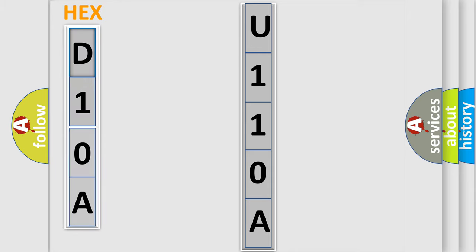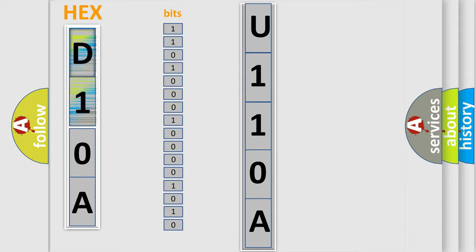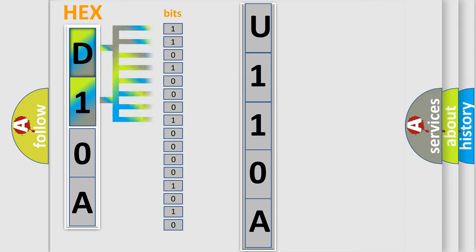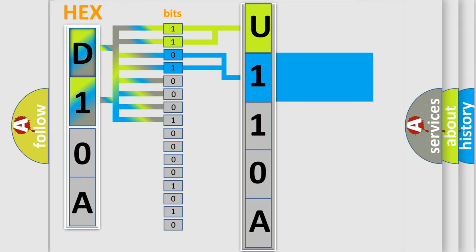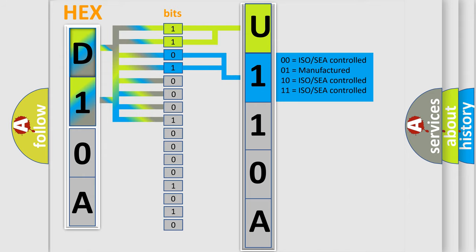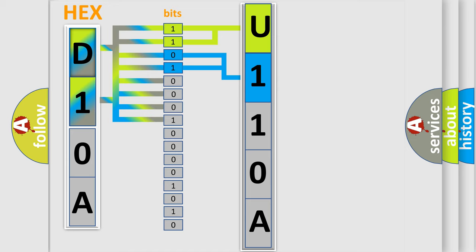The error code is split into two bytes consisting of 16 bits. One bit is the basic unit that each computer works with. The bit has two logical states: zero, low level, and one, high level. By combining the first two bits, the basic character of the error code is expressed. The next two bits determine the second character. The last four bits of the first byte define the third character of the code.